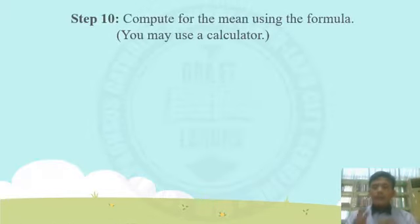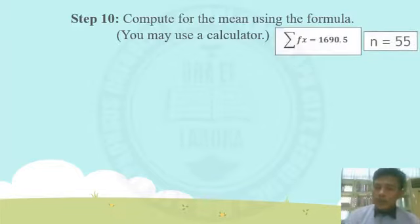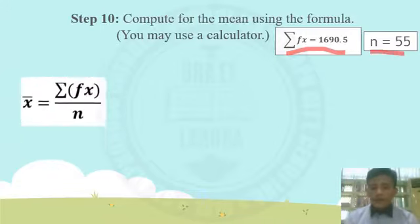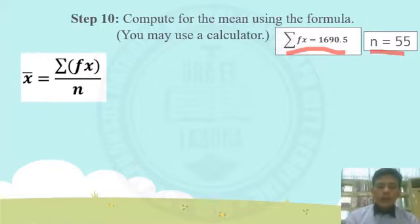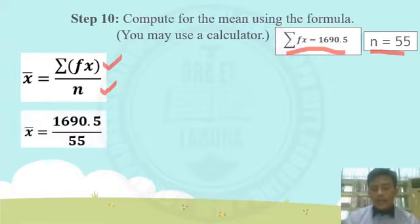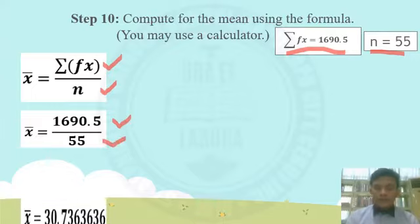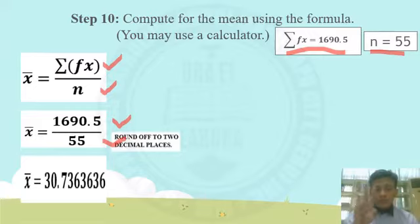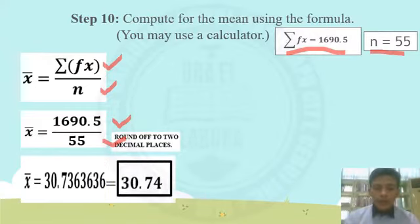Step 10: compute for the mean using the formula. The summation of fx is 1,690.5 and n equals 55. Mean equals summation of fx divided by n — that is 1,690.5 divided by 55, which equals 30.7363... Rounded to two decimal places, the mean is 30.74.